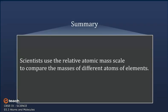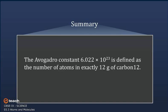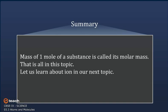Summary: scientists use the relative atomic mass scale to compare the masses of different atoms of elements. Atoms of carbon-12 isotopes are assigned a relative atomic mass of 12, and the relative masses of all other atoms are obtained by comparison with the mass of a carbon-12 atom. The Avogadro constant 6.022×10²³ is defined as the number of atoms in exactly 12 grams of carbon-12. Mass of 1 mole of a substance is called its molar mass. Let us learn about ions in our next topic. Bye-bye!